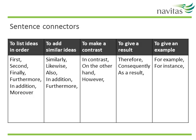Here are some words to link two separate sentences. You can use words like first, second, finally, furthermore to list ideas. You could use words like similarly, likewise, in addition to add similar ideas. If you want to make a contrast, you could say things like in contrast, on the other hand, or however. And so on.